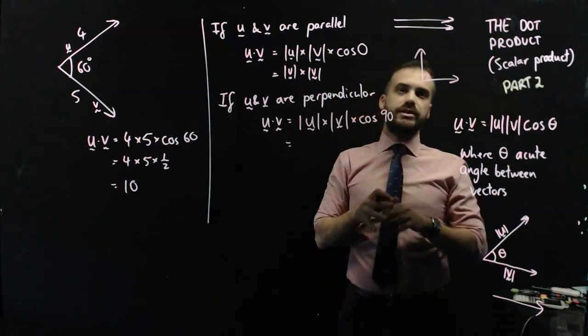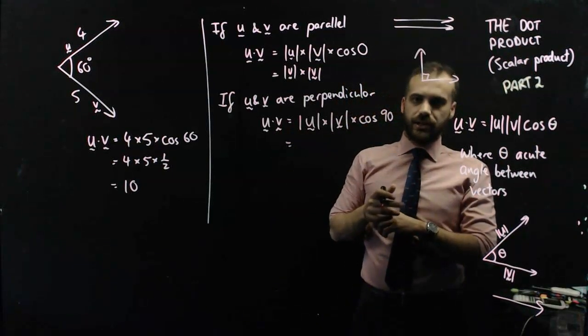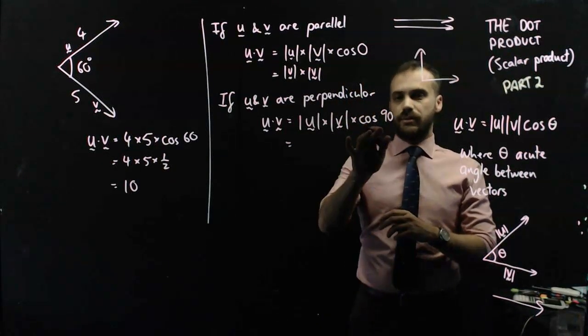Now cos 90, if you type that into your calculator, you'll get the number zero.